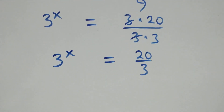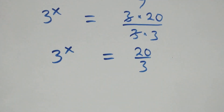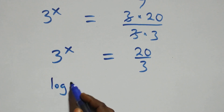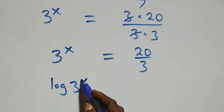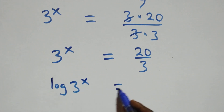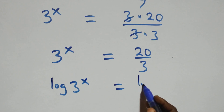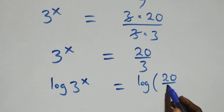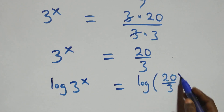The next step: we take the log on both sides. That is, we have log of three raised to the power x equals log of twenty over three.